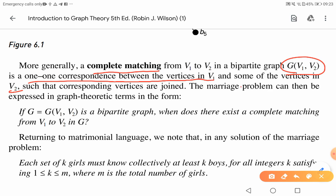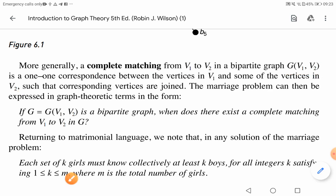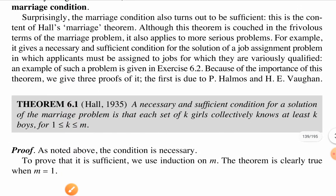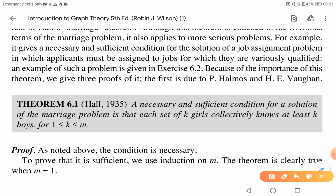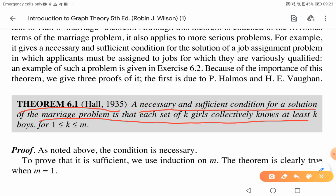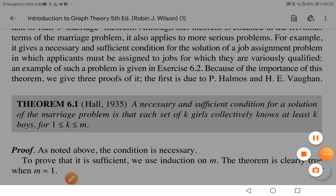Continuing with Hall's Theorem — Theorem 6.1 states: a necessary and sufficient condition for a solution of the marriage problem is that each subset of k girls collectively knows at least k boys, for all k where 1 ≤ k ≤ m. That is Hall's Marriage Theorem.